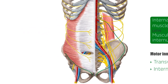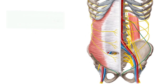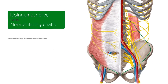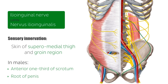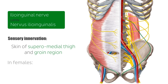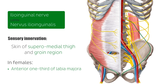The ilioinguinal nerve also provides sensory innervation to the skin of the supramedial thigh and the groin region. In males, this includes cutaneous innervation of the anterior third of the scrotum and the root of the penis. While in females, this includes the cutaneous innervation of the anterior third of the labia majora and the root of the clitoris.